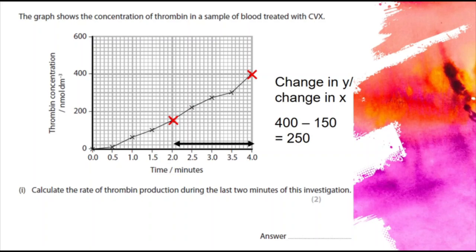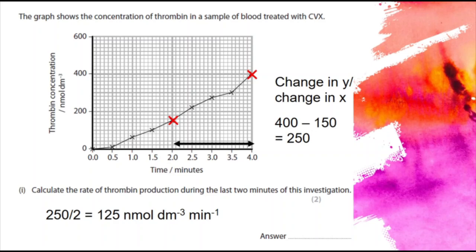You're dividing the change in Y by the change in X, which is two minutes. So you get 125, earning one mark. The other mark is for the units: because we divided nanomoles per decimetre cubed by minutes, our rate is nanomoles per decimetre cubed per minute. You could also write it with a minus one exponent, but per minute is the most commonly used form.